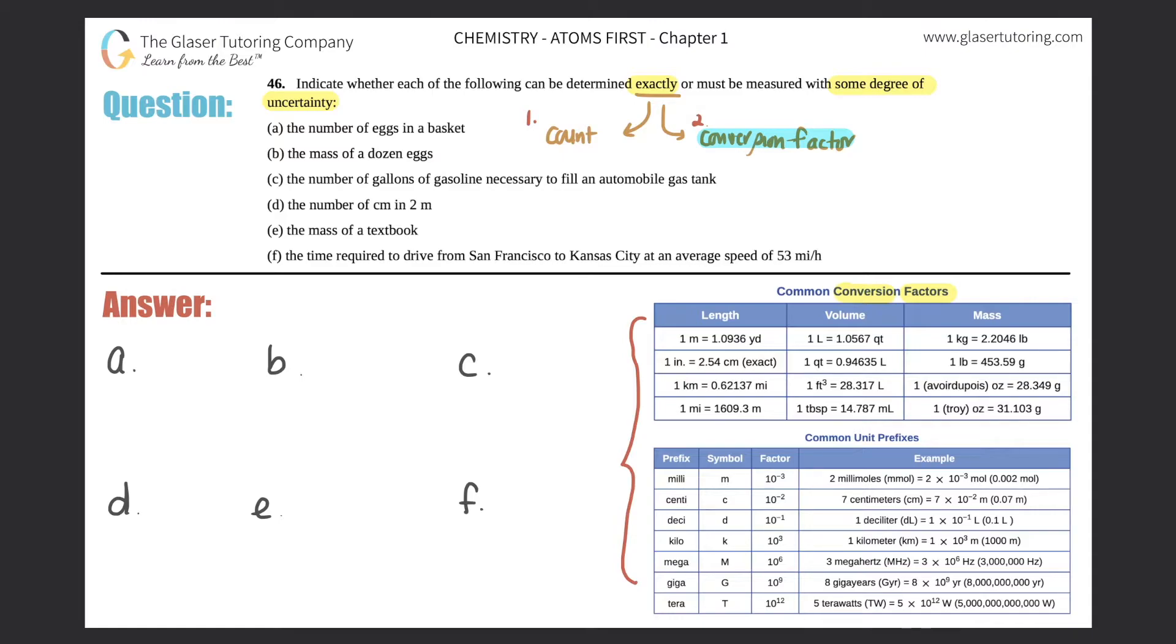Uncertainty, however, there's some discretion. Could be this, could be not. You're just not sure. So anything that can be measured with a degree of uncertainty, you're just not sure. Can't be counted and it's not coming from a conversion factor.